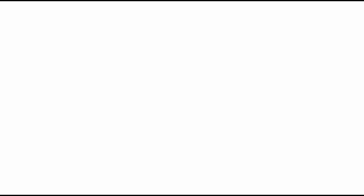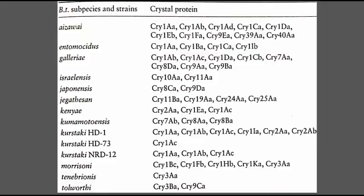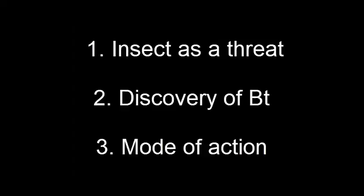Other cry proteins were then discovered, belonging to different families and sub-families of the cry routine, and specific cry proteins were identified against different insect classes. So far we know the problems caused by insects, how Bt was found, and how it actually works. Now let's talk about the plants developed using the Bt-based GM approach — how it was done and what problems were faced.